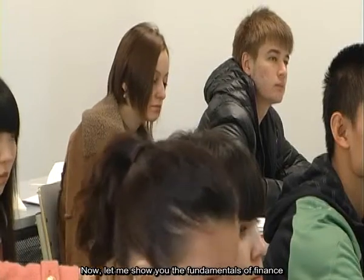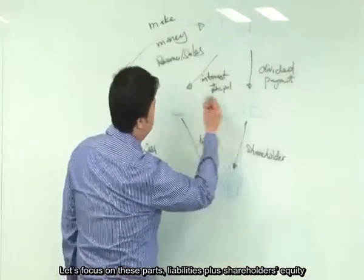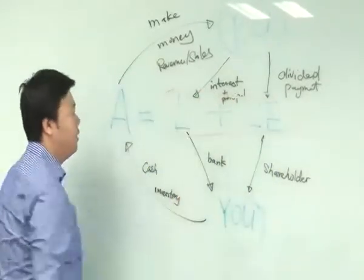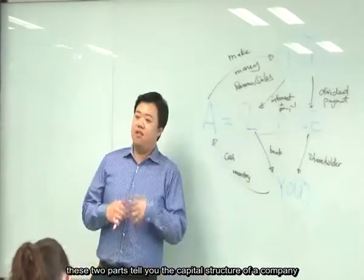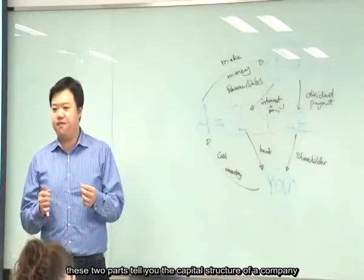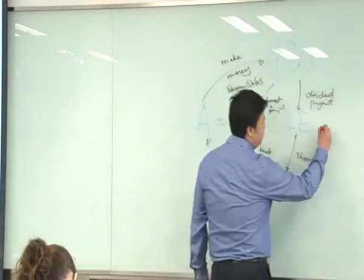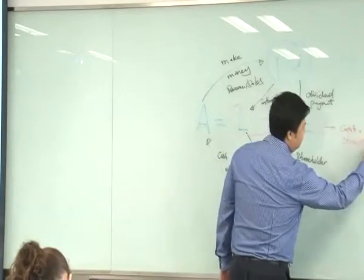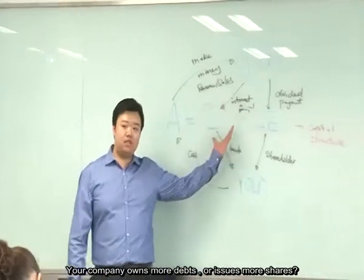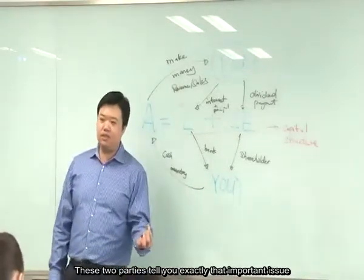That's the fundamental of accounting and financing. Now let me show you the fundamental of finance. We have three parts here. In terms of finance, liability plus shareholders' equity tells me the capital structure of a company — whether the company has more debts or issues more shares. Those two sides represent that important question of capital structure.